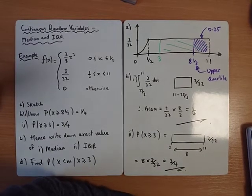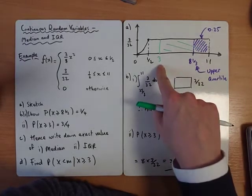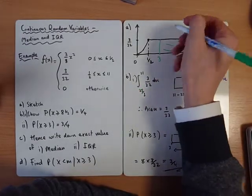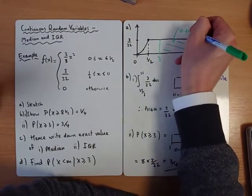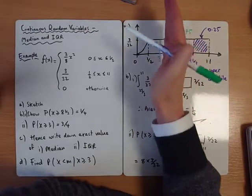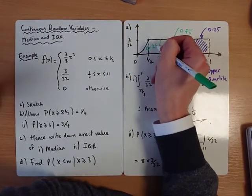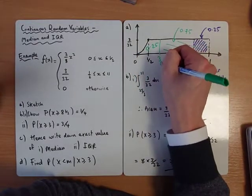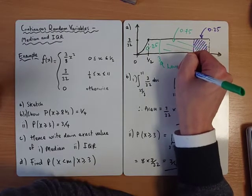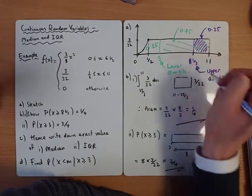What's the significance of that? We know that this number here, this area to the right, is 0.75. Another way of thinking about that is this area to the left, all of this area, is 0.25. So that means that is our lower quartile.